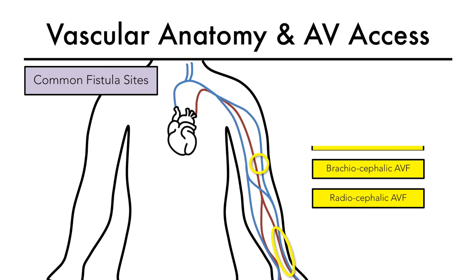The third common site is brachiobasi­lic, more proximally and medially. In the absence of suitable forearm cephalic vein, the median cubital vein can be used along with the radial artery or the brachial artery to create an upper forearm or lower arm AV fistula.